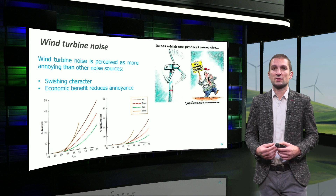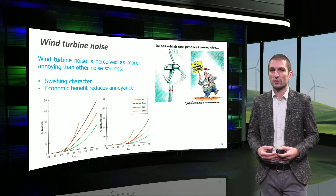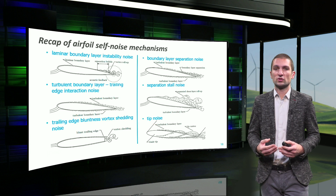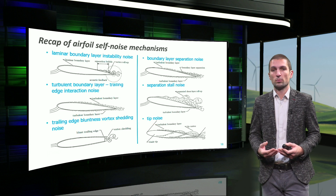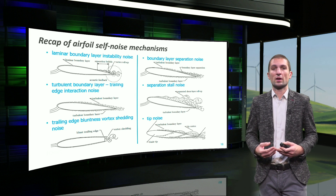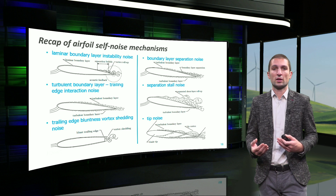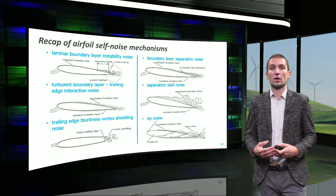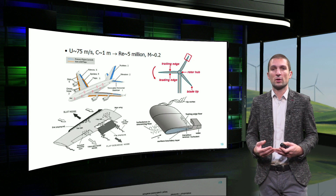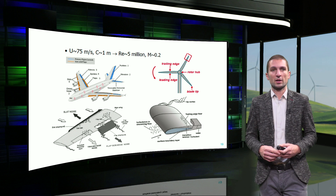An additional interesting test case is represented by another bladed machine: the wind turbine. Although the correlation between noise exposure and health effects is not really evident, the annoyance created by such machines is quite well known. Wind turbine noise is generally determined by airfoil self-noise, and six components are generally referred to for the creation of such noise. Have a look at the different mechanisms, organized by the characteristics of the edge — leading or trailing — and by the characteristics of the boundary layer — turbulent or laminar. It is quite interesting to see that, due to the increased size of aircraft and wind turbines, similar flow regimes and noise sources can be found between the two different machines, with important consequences on their aerodynamic and aeroacoustic design.